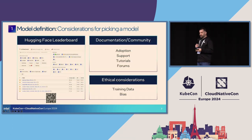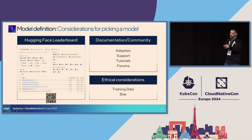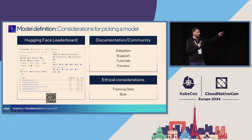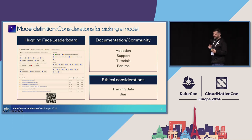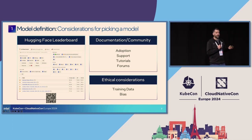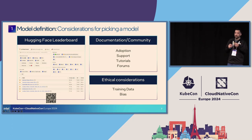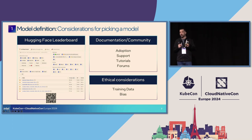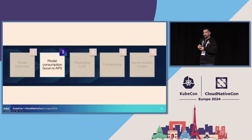The first challenge is deciding how to pick a model — there are three main considerations. First is the leaderboard: how your model performs against public benchmarks on HuggingFace. Second is community: is it actively used, are there tutorials and forums? The feedback from people is very important. Third is ethical considerations: you need to know if your model is biased, to mitigate that bias, and you should consider the training data.